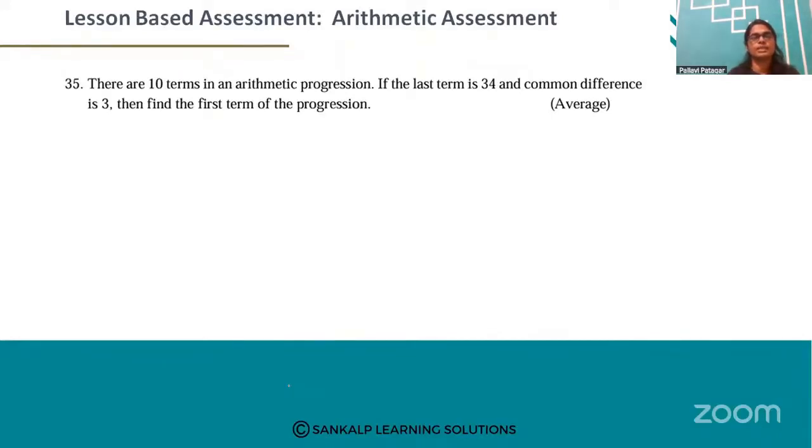Look at question number 35. There are 10 terms in an arithmetic progression. If the last term is 34 and the common difference is 3, then find the first term of the progression.